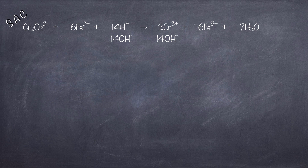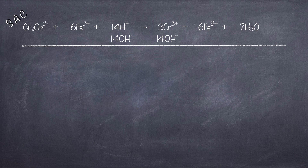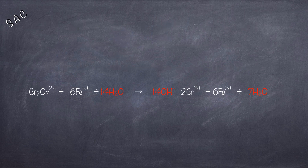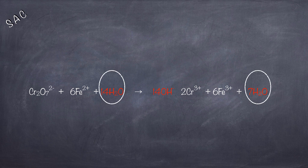We will also need to add 14 hydroxide ions on the product side. Now we are going to add the H⁺ and OH⁻ ions on the reactant side, and that will give us 14 water molecules when you add the two together. This is the next equation that we will get — you can see there are 14 water molecules on the reactant side and seven water molecules on the product side.